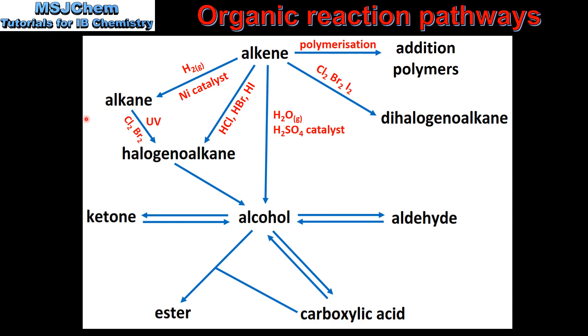Next we have a free radical substitution reaction, in which an alkane reacts with a halogen such as chlorine or bromine in the presence of UV light to form a halogeanoalkane.